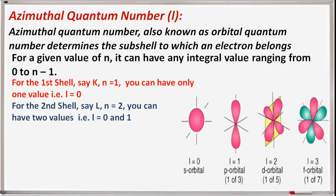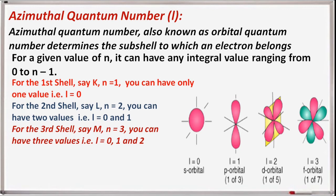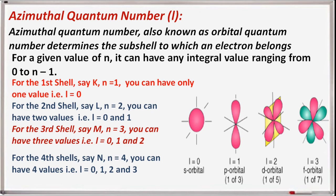Here, l=0 represents the s orbital, l=1 represents the p orbital, l=2 represents the d orbital, and l=3 represents the f orbital. For the third shell M (n=3), there are three values of l: 0, 1, and 2. For the fourth shell N (n=4), there are four values: l=0, 1, 2, and 3.